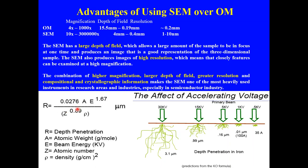Using the Kanaya-Okayama formula for depth of penetration, R is equal to 0.0276 times A times E raised to the power 1.67, divided by Z raised to the power 0.89 times rho — where R stands for depth of penetration, A for atomic weight in grams per mole, E for beam energy in kilovolts, Z for atomic number, and rho for density.